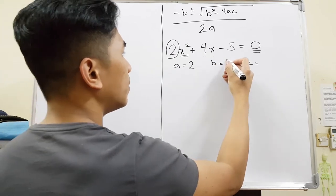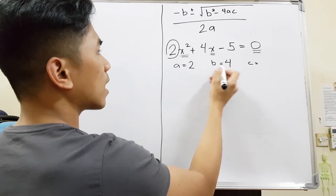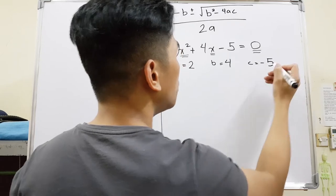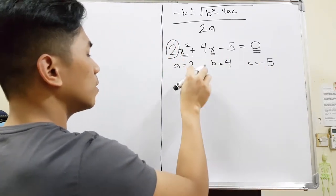So here, our B will be 4. B is the number before the x. And then C is the normal number. Just take note that you are taking their signs. As you can see, positive, positive, negative.